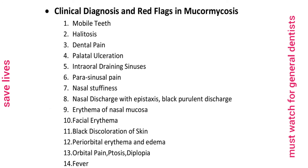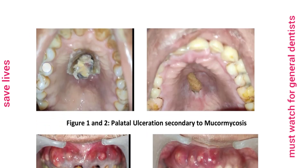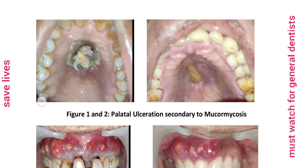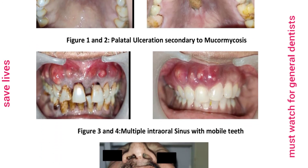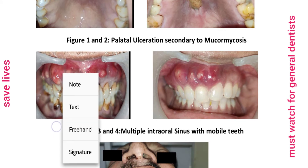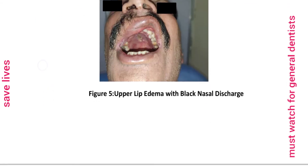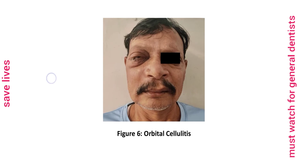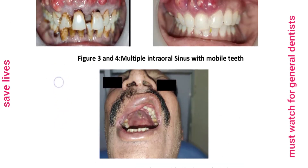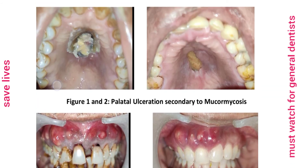Whenever you are encountering this kind of clinical picture in any post-COVID patient, you have to be cautious about Mucormycosis. These are some clinical pictures you can expect: palatal ulceration secondary to Mucormycosis — this publication is from Maharashtra State Dental Council. Also multiple intraoral sinuses with mobile teeth, upper lip edema with black nasal discharge, and orbital cellulitis in a patient of post-COVID-19 Mucormycosis.